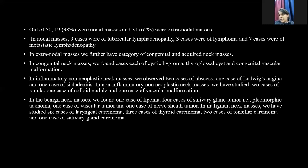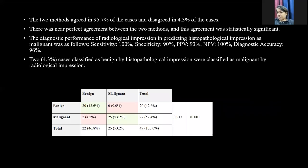In benign neck masses, we found one case of lipoma, four cases of salivary tumor — that is pleomorphic adenoma — one case of vascular tumor, and one case of nerve sheath tumor, which was schwannoma in our case. In malignant neck masses, we studied six cases of laryngeal carcinoma, three cases of thyroid carcinoma, two cases of tonsillar carcinoma, and one case of salivary gland carcinoma.